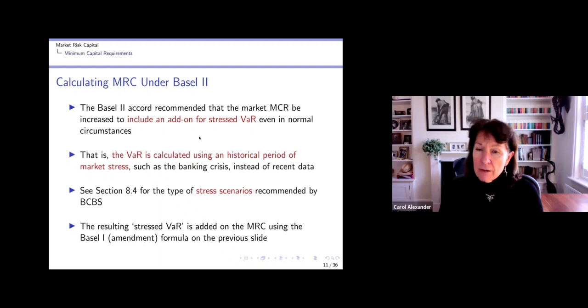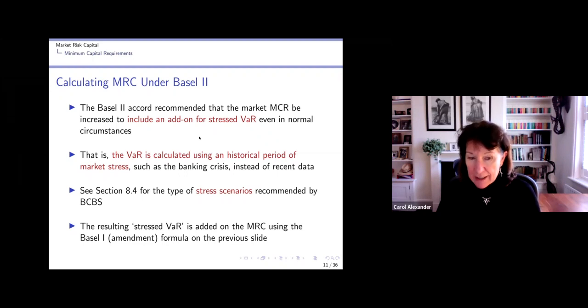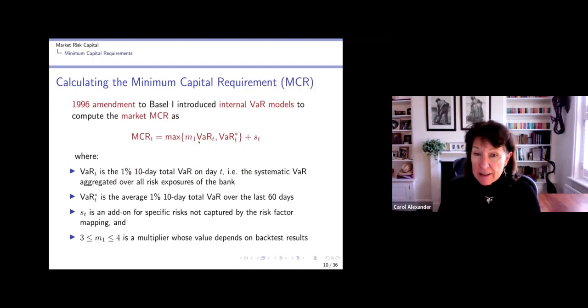And so banks had to increase the MCR a huge amount following that. So to calculate that stressed VaR, the VaR had to be calculated using an historical period of stress, such as the banking crisis. Instead of using recent data, we'll go through what we call stress testing in section 8.4 and the various scenarios recommended by the Basel Committee for Banking Supervision. Anyway, so you calculate that stressed VaR and add it on to the minimum capital requirement using the formula on the previous slide. So if you calculate this one, you have to have another add-on here for the stressed VaR.